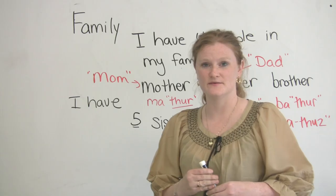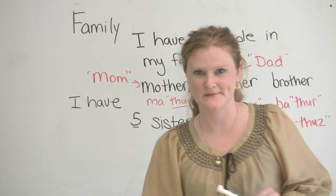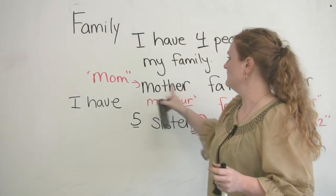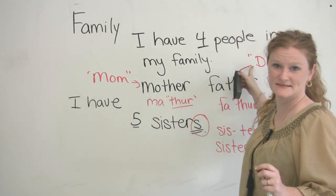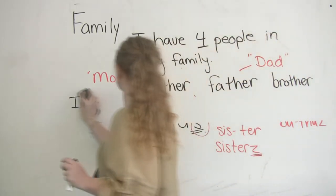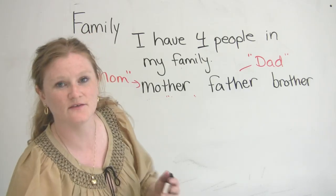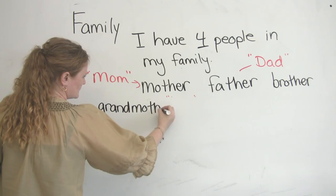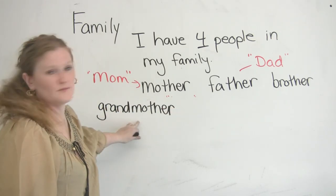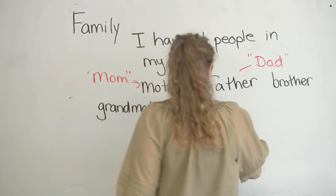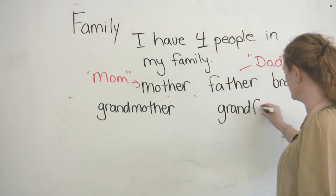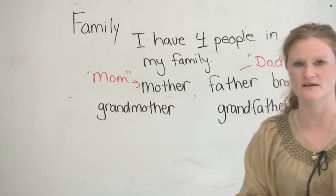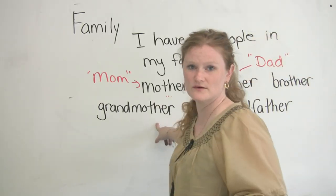There are some other very important people in your family that we need to talk about. They are maybe a little bit older than you — older than your mother and older than your father. Does anyone know the name of your mother's mom or your father's dad? In English, we say grandmother and grandfather. So your mother's mother is your grandmother, and your father's dad is your grandfather. But again, in English, we don't like words that are very long and very formal.